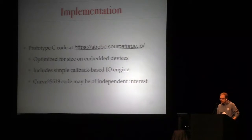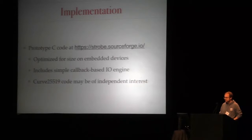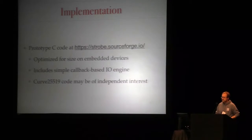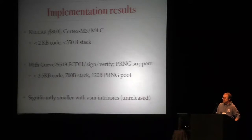There's some prototype code at strobe.sourceforge.io, designed primarily for minimal size in embedded devices and for simplicity. It has a little I/O engine with callbacks so you can use the same operation to talk to a file system or a socket. Additionally there's some lightweight Curve25519 ECDH, signature, and verification code that might be interesting — it has a much smaller stack footprint than other implementations of Curve25519, which might matter in the kernel. The code total is less than 4 kilobytes and uses less than 1 kilobyte of stack. There's an unreleased version using some assembly to get significantly smaller, but this is just the C version, and it's a portable implementation on ARM.